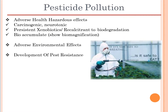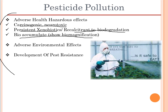Some of the adverse effects of these pesticides on the environment and on us include: they may be carcinogenic or neurotoxic, they are persistent xenobiotics recalcitrant to biodegradation, and they also bioaccumulate or show biomagnification — which is the accumulation of pollutants through the food chain — causing adverse environmental effects.